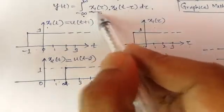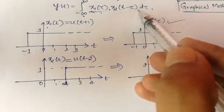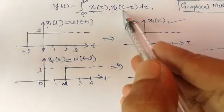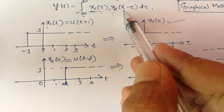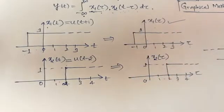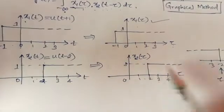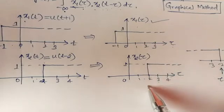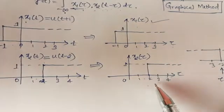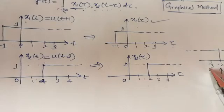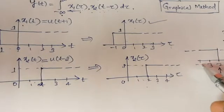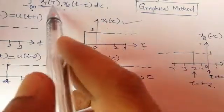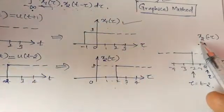Next, to get x2(t−τ) from x2(t−2), we substitute t = 0, which gives x2(−τ) — a reflected version of x2(τ). Replacing τ with −τ means the signal now starts from −2, −3, −4 and so on. So we sketch x1(τ) as well as x2(−τ).